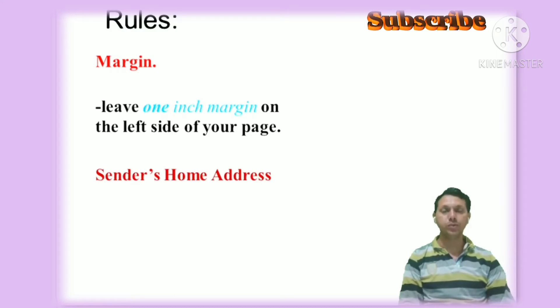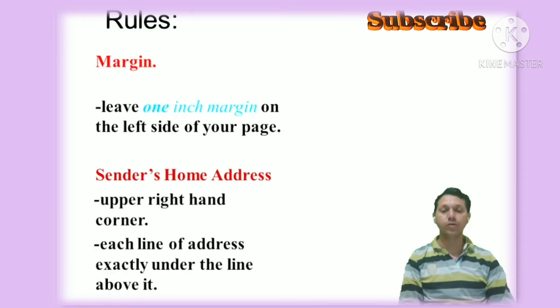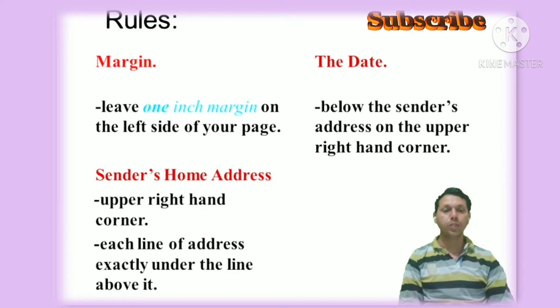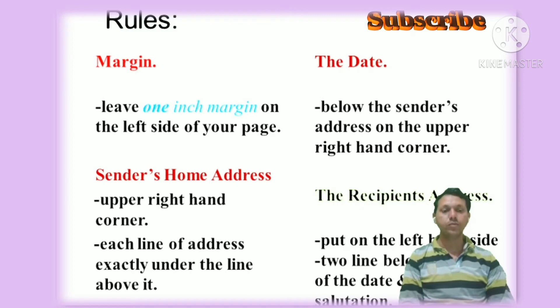Sender's home address must be upper right hand corner. Each line of address is exactly under the line above it. The date is below the sender's address on the upper right hand corner. The recipient's address - put on the left hand side, two lines below the level of the date and above the salutation.